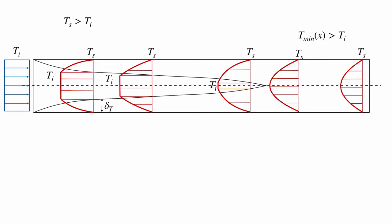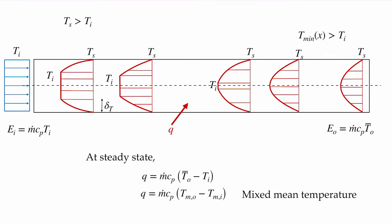This is where we're taking our profile, and so this line corresponds to where the temperature has not changed from the inlet value. As we progress further into the pipe, this region will cover more of the pipe.